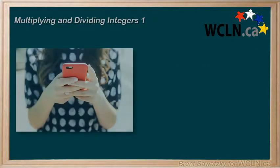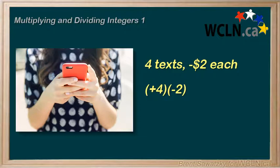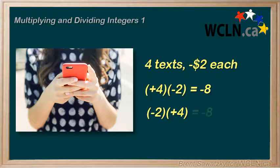What if we texted four times during a holiday internationally, and then we're told that we owed $2 each time we text? We'd have four calls with each one causing us a loss of $2, or four groups of minus 2 equals a negative 8. We would owe $8. And like with any multiplication, we could multiply them in any order. It could be seen as a loss of $2 repeated four times, or minus 2 times plus 4 — same thing, minus 8. Still, we'd owe $8.